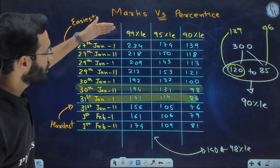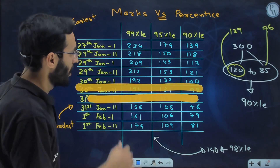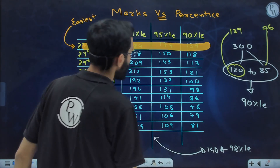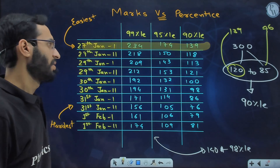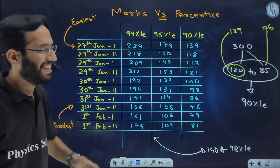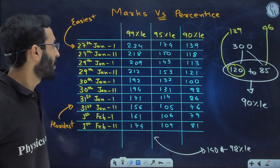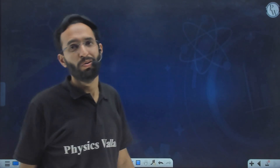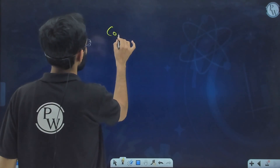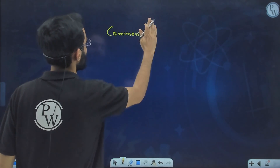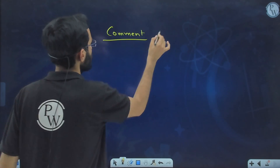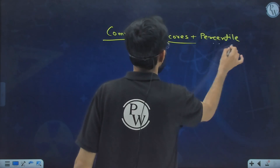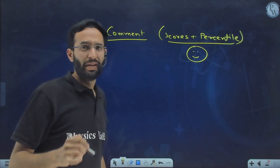Whatever marks you are getting with a different percentile, don't worry — it happens in JEE Mains. After the third hardest, there is the fourth hardest and fifth hardest. Initially the papers were easier, then the remaining papers were harder. Generally if I observe the trend in JEE Mains, initial papers are kept easier — but this much of a difference has never happened before. So please comment your scores and percentile so we can collect this data.